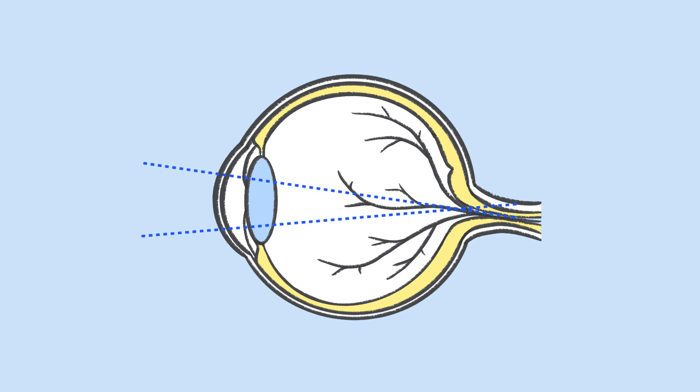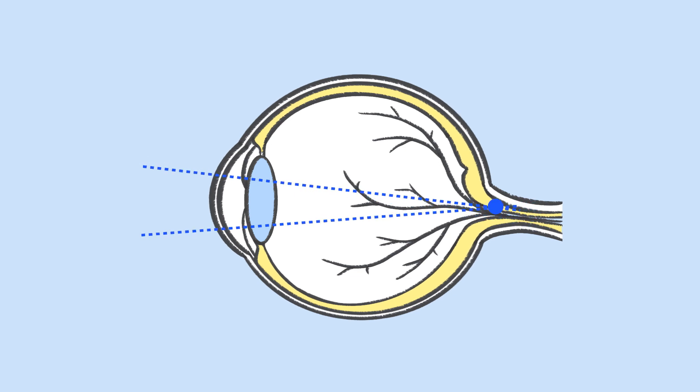If light focuses behind the retina, the eyeball will try to lengthen. Axial elongation.